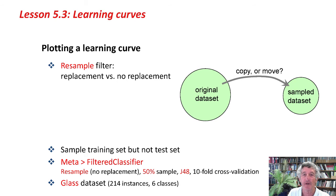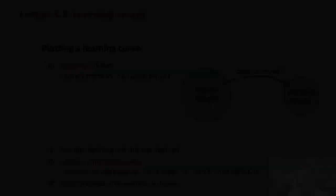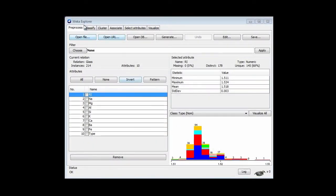We can do that in WEKA by using the filtered classifier. There's a resample filter, and if we wrap that up in a filtered classifier, that means that the filtering will apply to the training data and not to the test data. I'm going to do that with the glass data set.